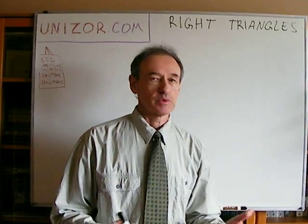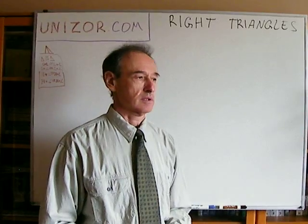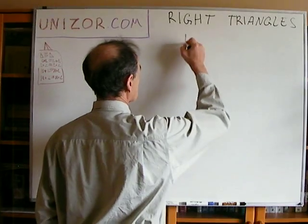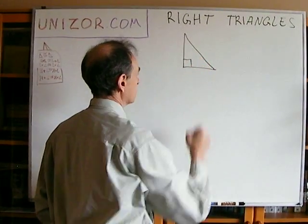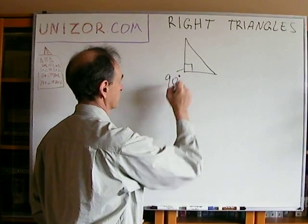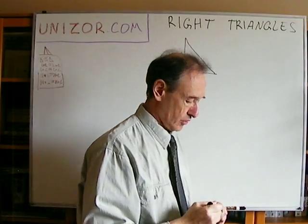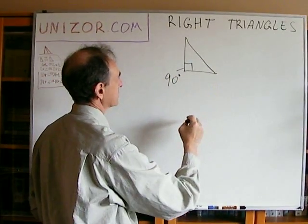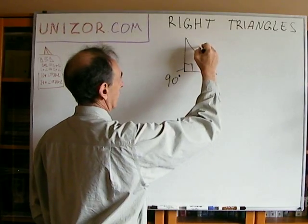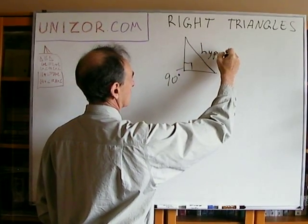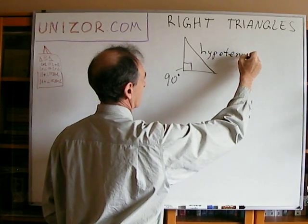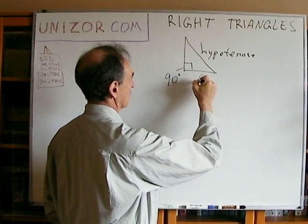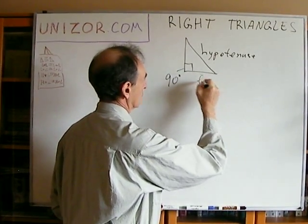Obviously we start with the definition. I'm sure everybody knows that the right triangle is the triangle which has one right angle — 90 degrees. From the terminological standpoint, the side which is opposite to this 90-degree angle is called the hypotenuse, and the two other sides are called legs.